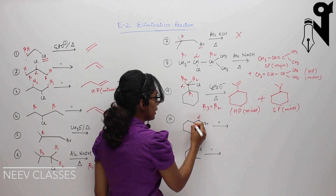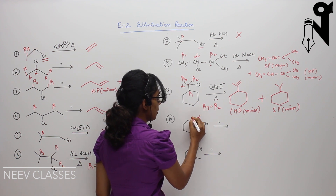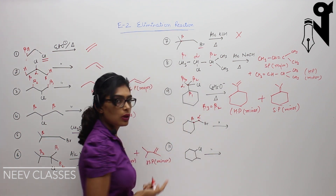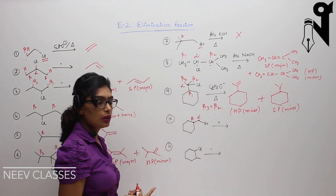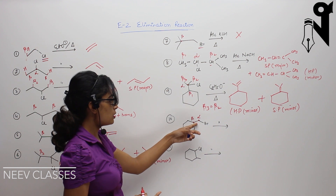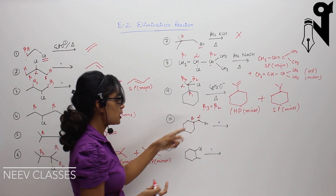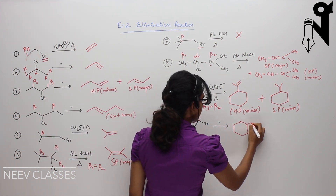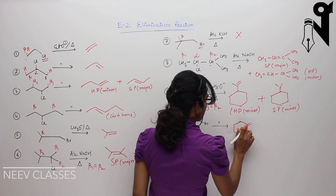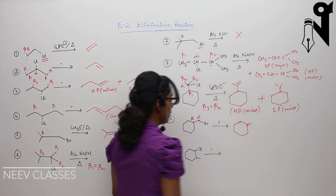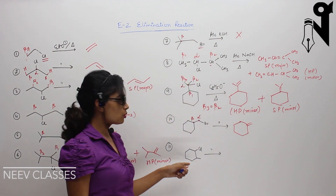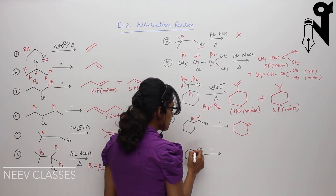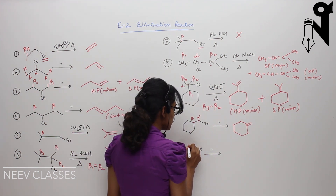For the tenth question, this is my alpha carbon and this is my beta carbon. There is only one possibility for hydrogen removal, so the product formed will be this.